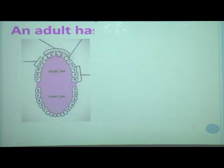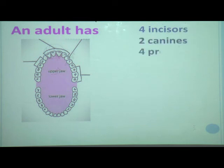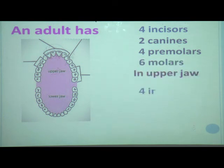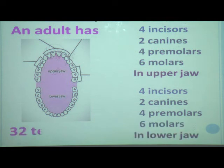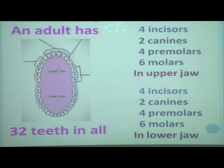So in summary, an adult has four incisors, two canines, four premolars, and six molars in the upper jaw, and the same in the lower jaw. That gives a total of 32 permanent teeth in all.